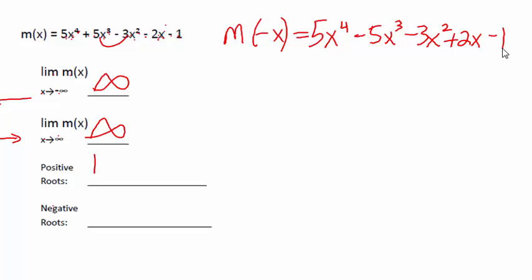What we do now is we count up the sign changes in this new function. We start with a positive and go to a negative. That's a sign change. Later on, we go from a negative back to a positive. That's a sign change. And we go here from a positive to a negative. That's a sign change. So we do have as many as three negative roots.